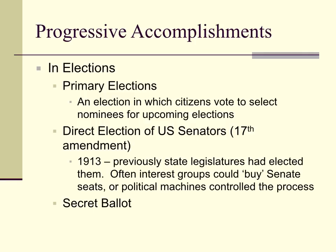The 17th Amendment established the direct election of U.S. senators, so now individual voters — me and you — can vote for our senators. You also have the secret ballot, where your vote isn't made public — you don't have to tell anybody who you're voting for. They used to make you say your vote publicly, which went completely against the Constitution, so the progressives made the secret ballot official.